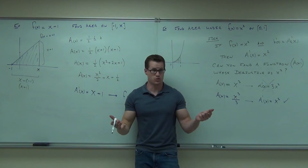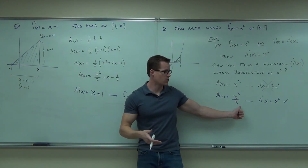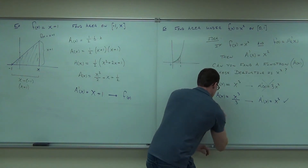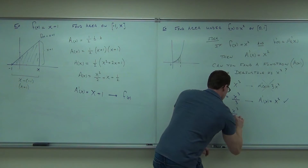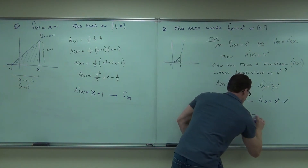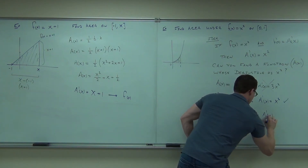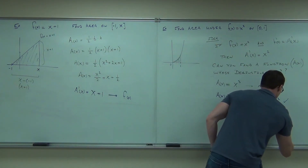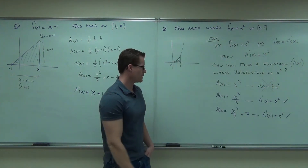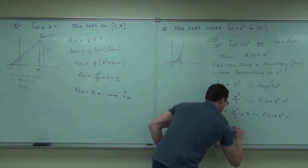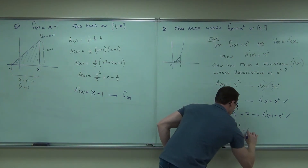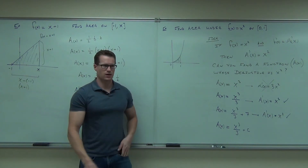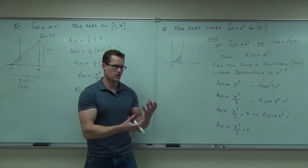So you're undoing a derivative — going backwards. We had to have that 'over three.' Now here's something that will blow your mind: what's the derivative of x³/3 + 7? The seven disappears. Any constant, no matter what it is, goes away when you take a derivative. So what you actually get is a family of curves.